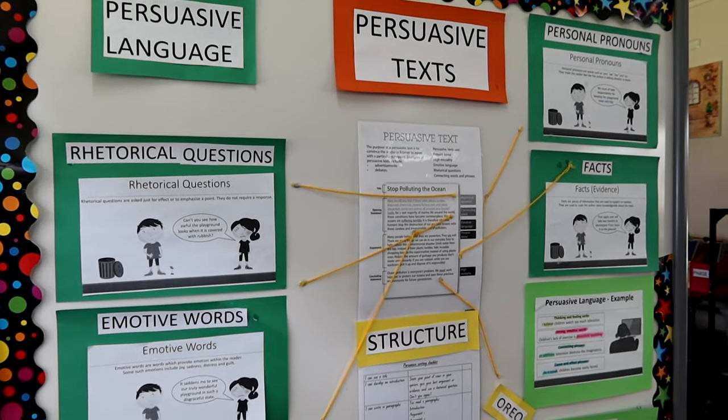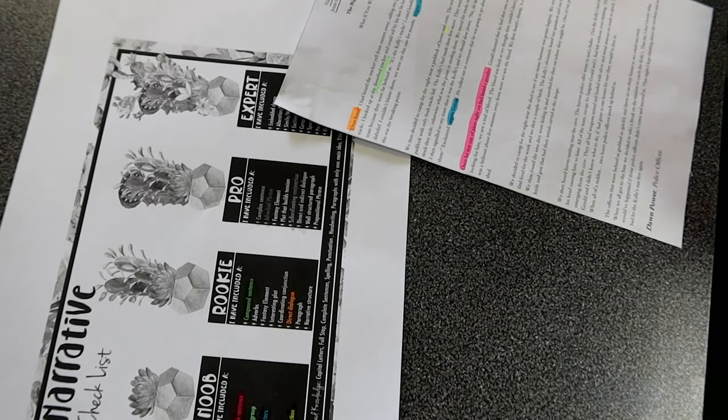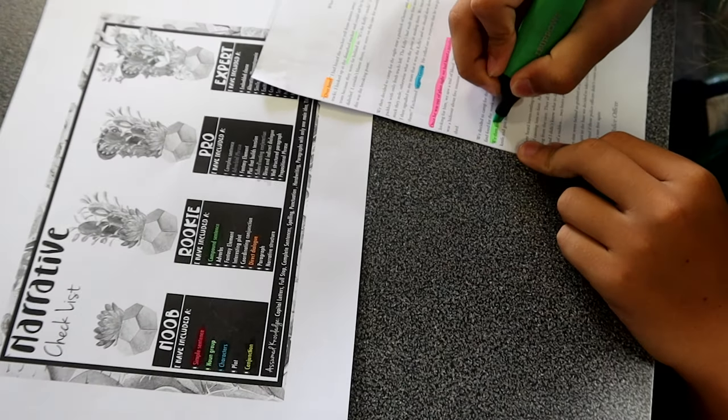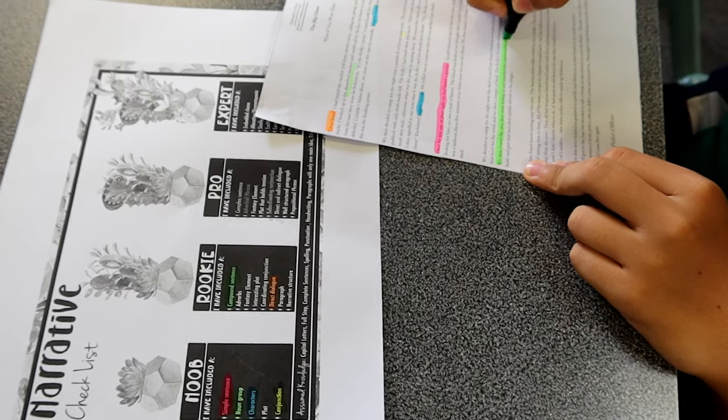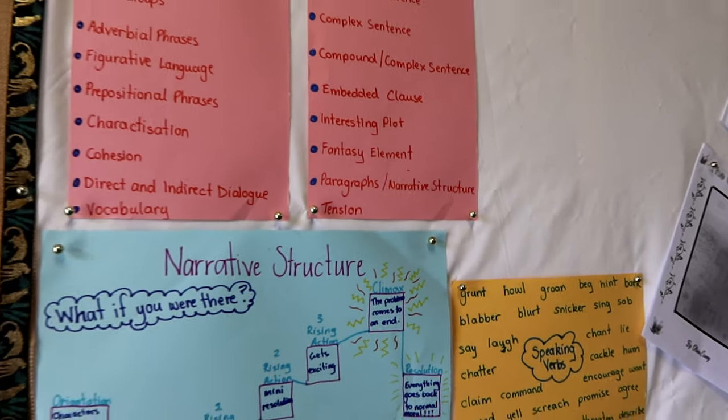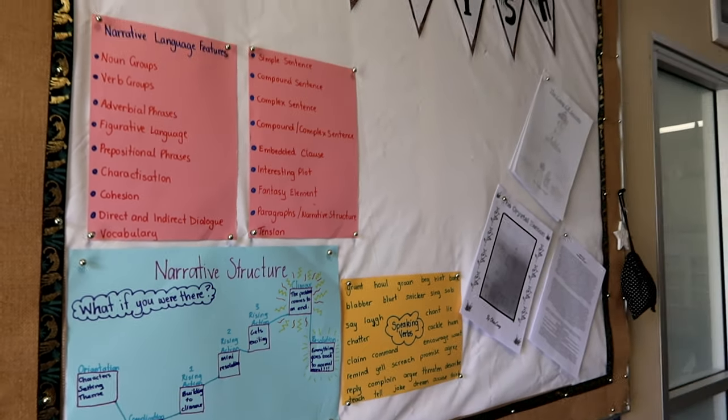Number one: self-assessment. After students have finished writing an assignment, let them evaluate themselves using the same matrix you do. Discuss the self-evaluation. You need to teach students how to use self-assessment matrices before letting them use it. For example, my students are currently writing a narrative requiring language features and structure. Together, we developed a rubric and I gave students resources to find examples if they'd forgotten what each language feature should look like. Students also use a bump-it-up wall to compare against their own work.